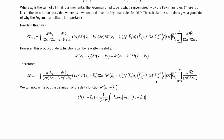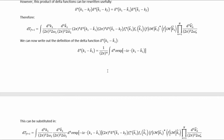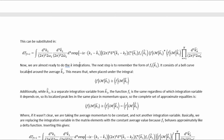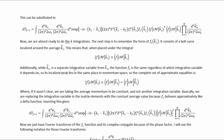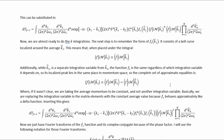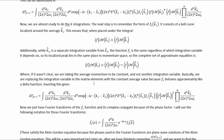We can then apply the famous delta function identity, write the delta function in terms of its definition and insert it in. Now we are almost ready to do the K integrations. The next step is to remember the form of F1: it consists of a bell curve localized around an average K1-bar. This means that when placed under the integration, the Feynman amplitude can be approximated by evaluating it at the average momentum, because F1 behaves approximately like a delta function. So the complete set of approximate equalities replaces the integration variable in the matrix elements with the constant average value.